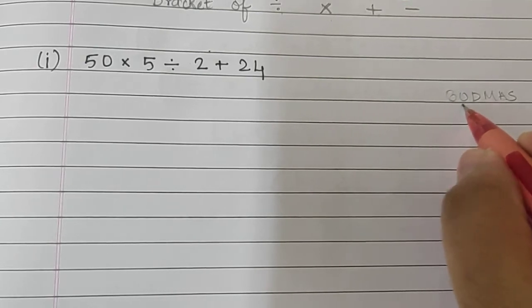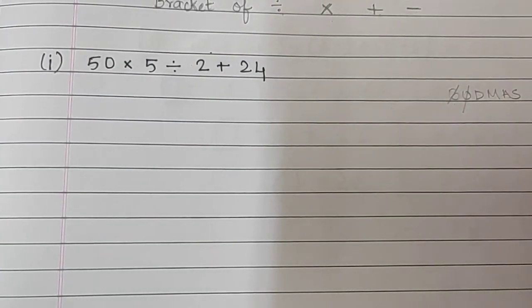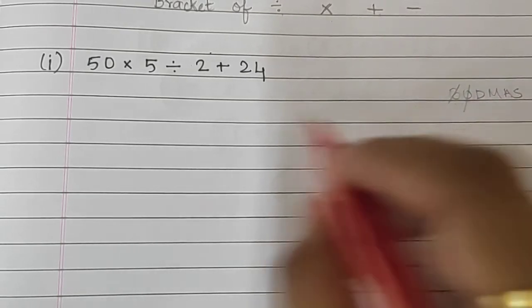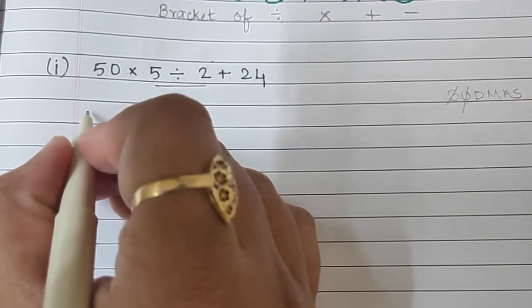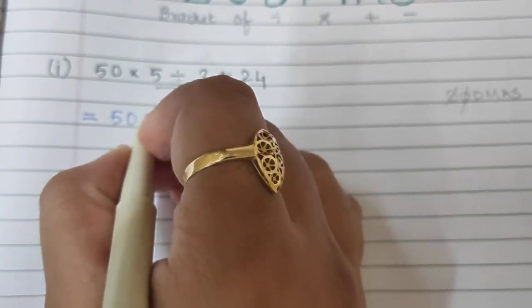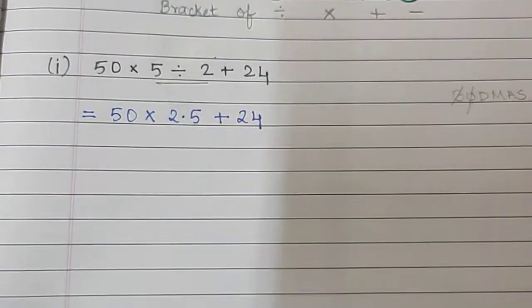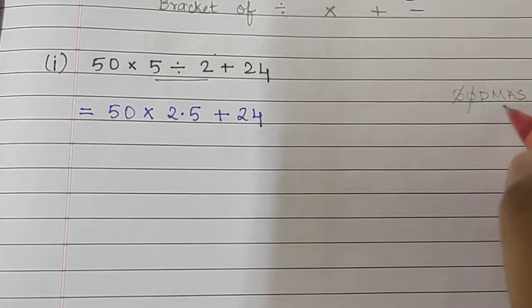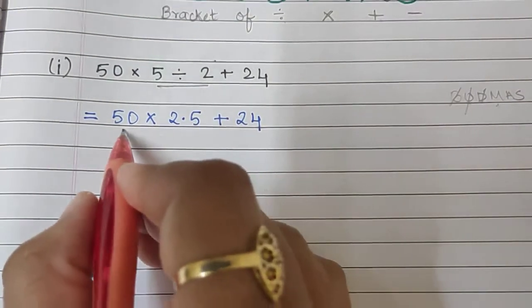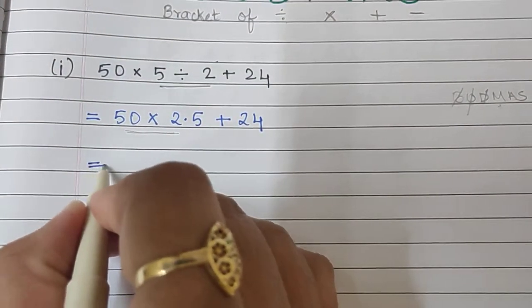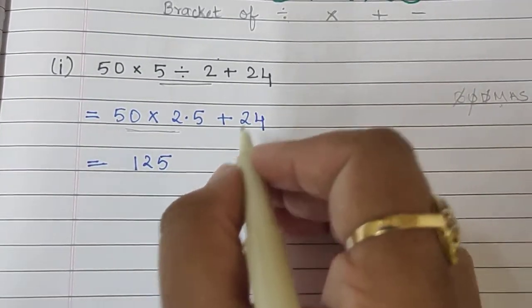The first step is Bracket Of. Now here there is absolutely no bracket, so we will cancel the Bracket Of. Next is Division — do we have any division here? Yes. So I am going to write in my next step: 50 into 5 divided by 2 is 2.5, plus 24. After division, the next operation is multiplication.